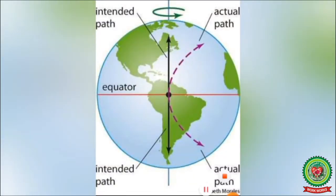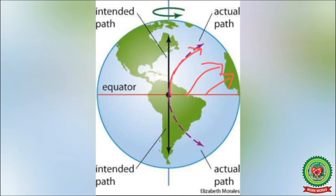Now in this diagram, we can see that the winds in the Northern Hemisphere are being deflected towards their right side. And if the winds are blowing in the Southern Hemisphere, they will be deflected towards their left side. This is Coriolis force as stated by Ferrell's law.